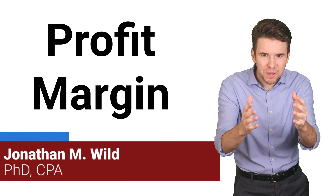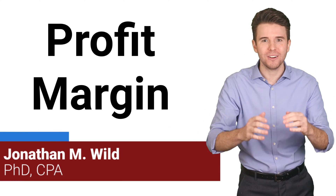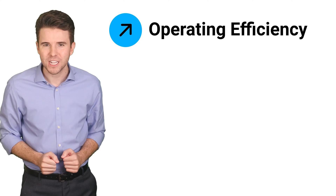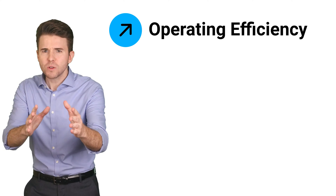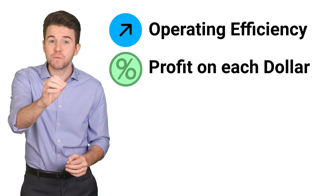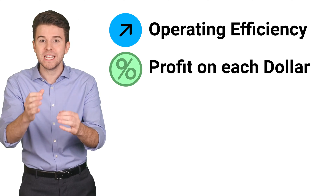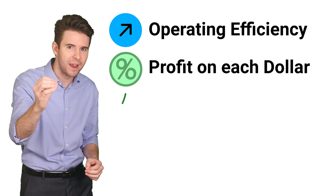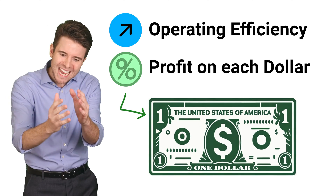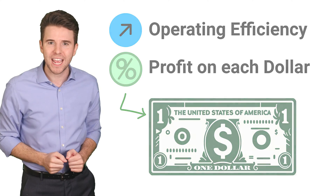Hey, I'm Jonathan Wild, and today we're exploring how to compute profit margin. Profit margin is a fantastic way to measure a company's operating efficiency. It shows us the percentage of profit the company is able to generate from each dollar of sales.